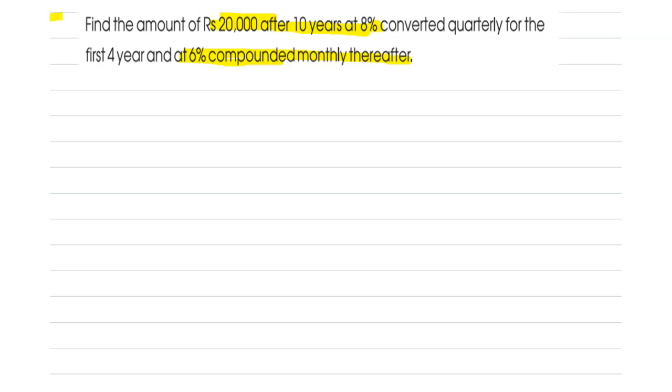Now first four years we will consider, so we will split it into two cases. The first case is for four years, the principal is given as 20,000 and n here is 4 and rate of interest i is equal to 8 by 100 which is equal to 0.08.